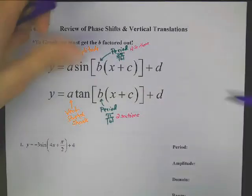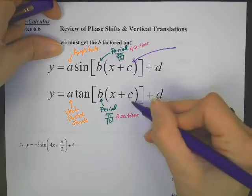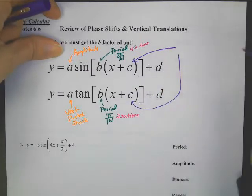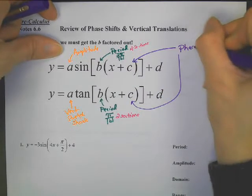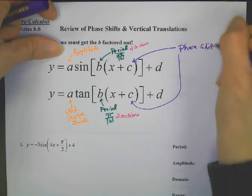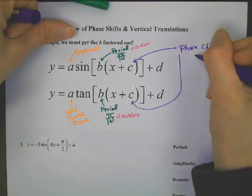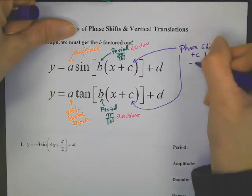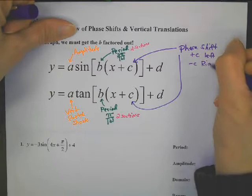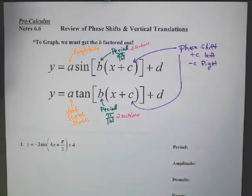For any type of graph, the C is the same — it is phase shift, which is the horizontal translation left and right. If you see plus C, that means you go to the left, and if you see minus C, that means you go to the right. Remember, inside is like X-Files — it's a little weird.